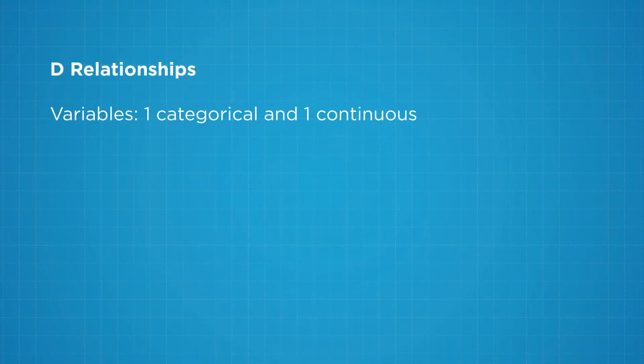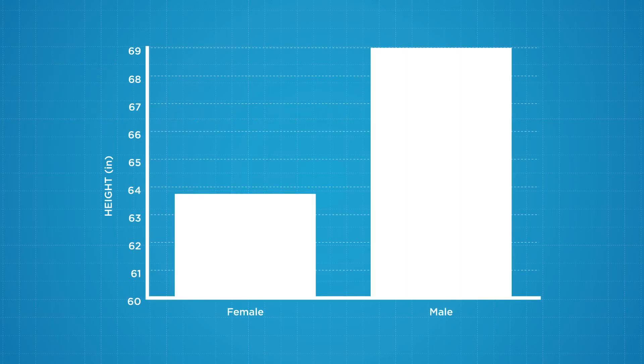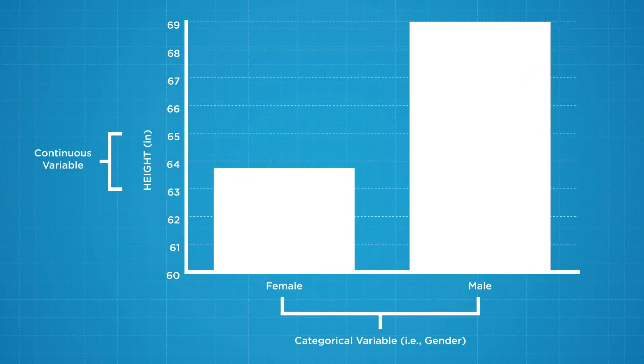So circling back to the D relationship, when we are looking at a D relationship, as I said before, we're looking at the difference between two groups. So we have one categorical variable and one continuous variable. So in this graph that you can see here, you can see that there's a difference between men and women and how they scored on some variable. This variable could be anything in terms of height, right? Men generally tend to be taller. Are all men taller than all women? Absolutely not. But generally that tends to be the case and we can see that depicted in a D relationship.